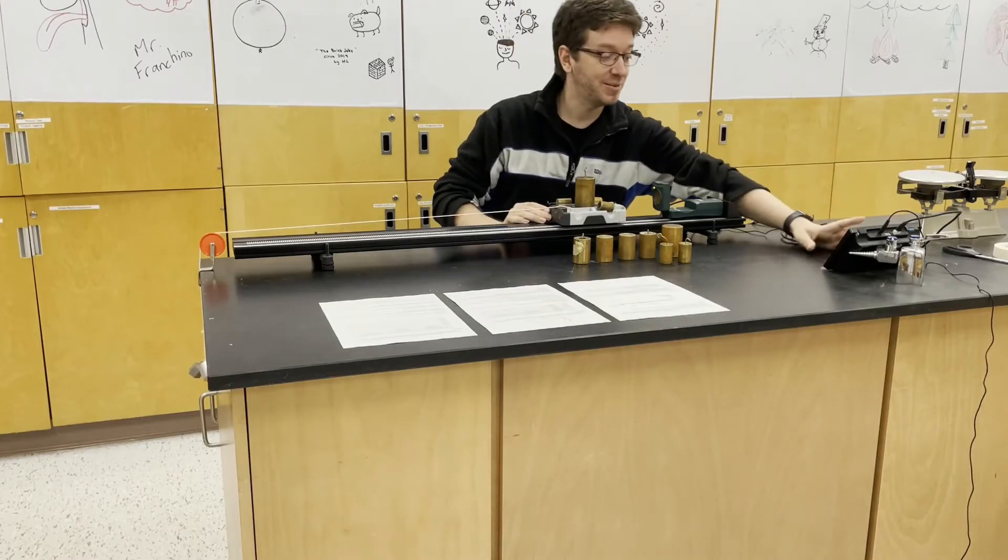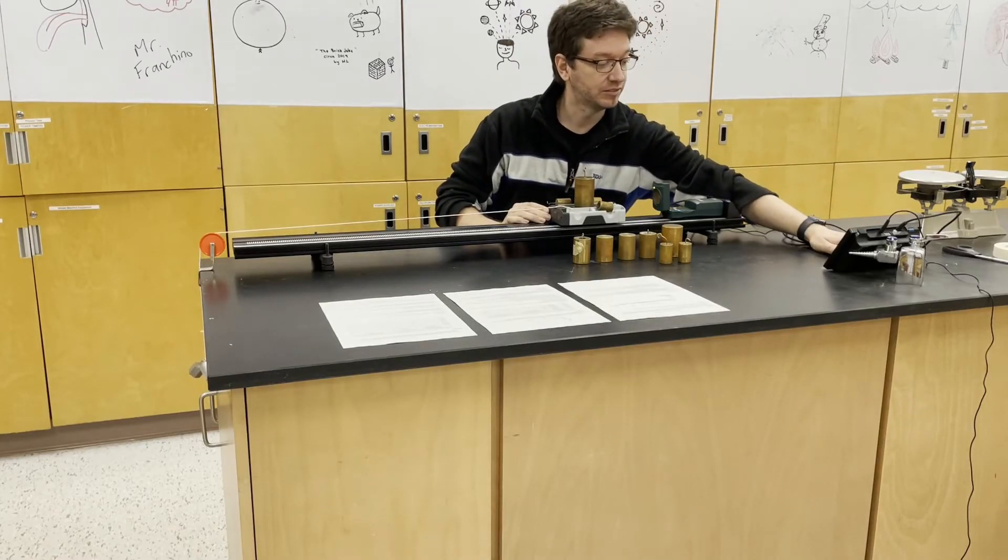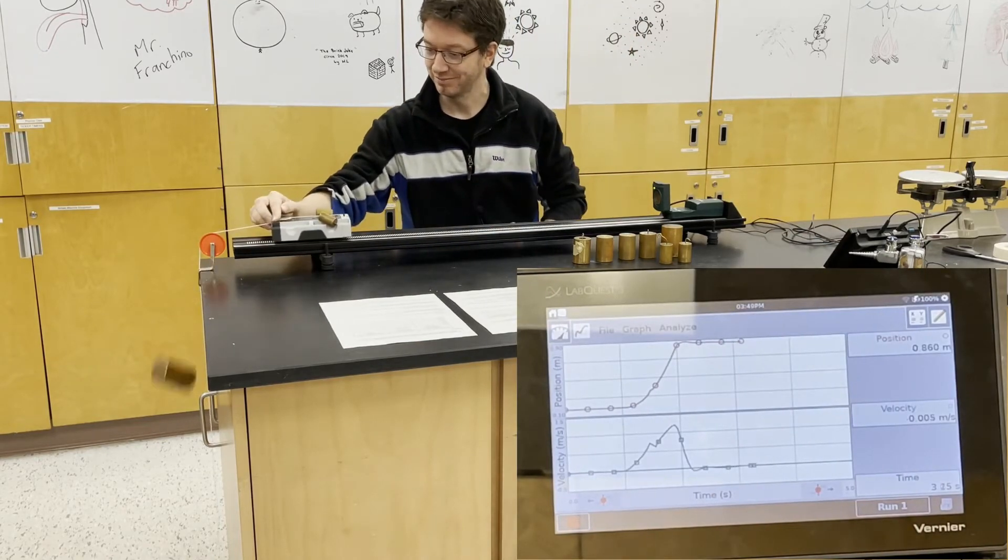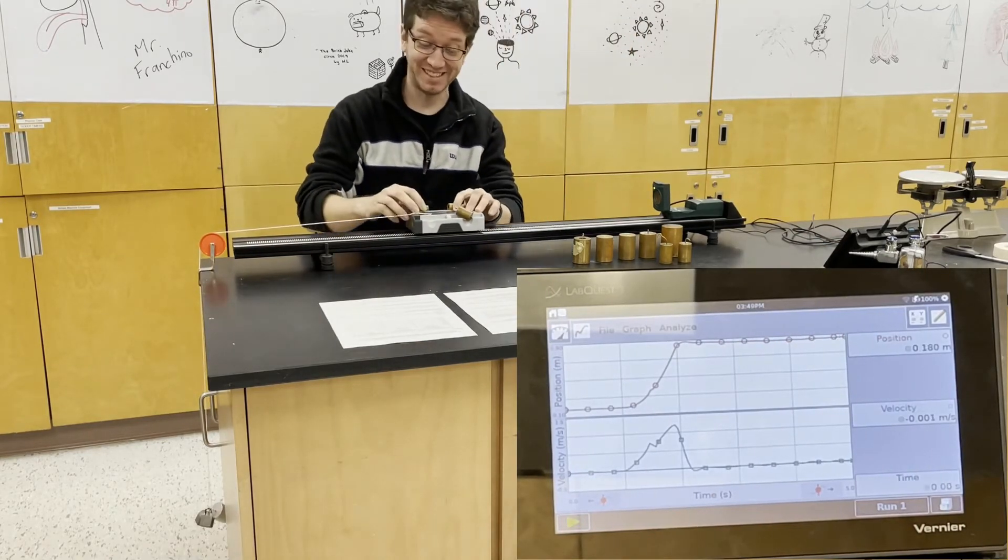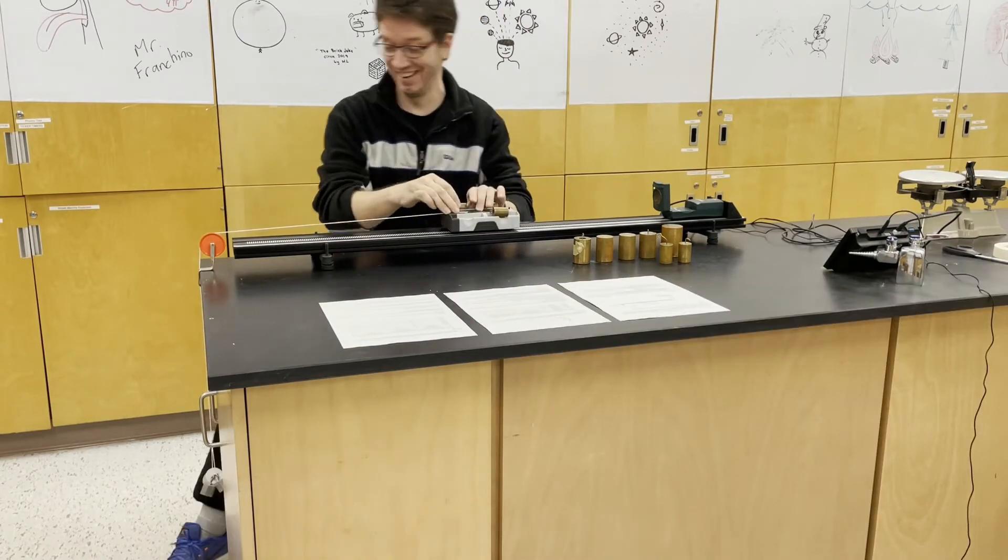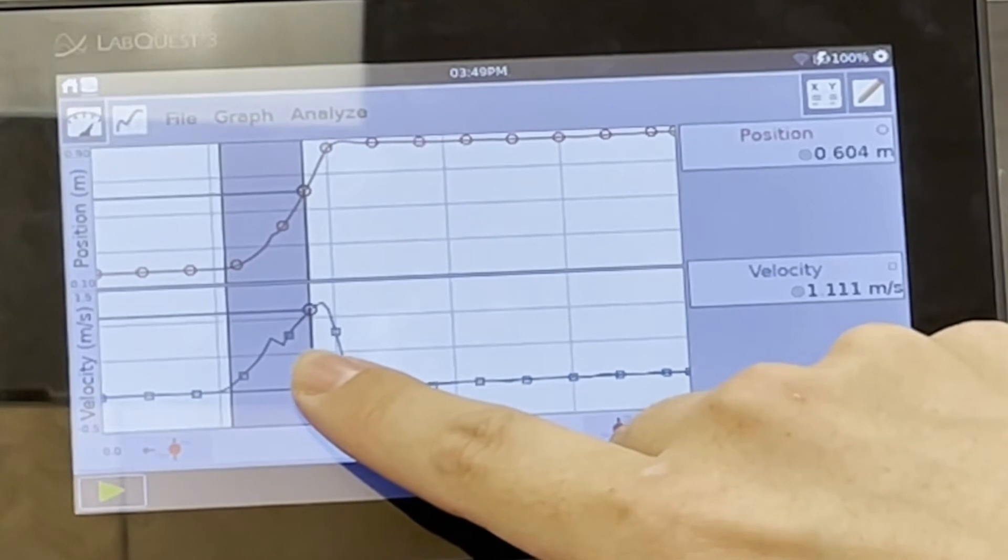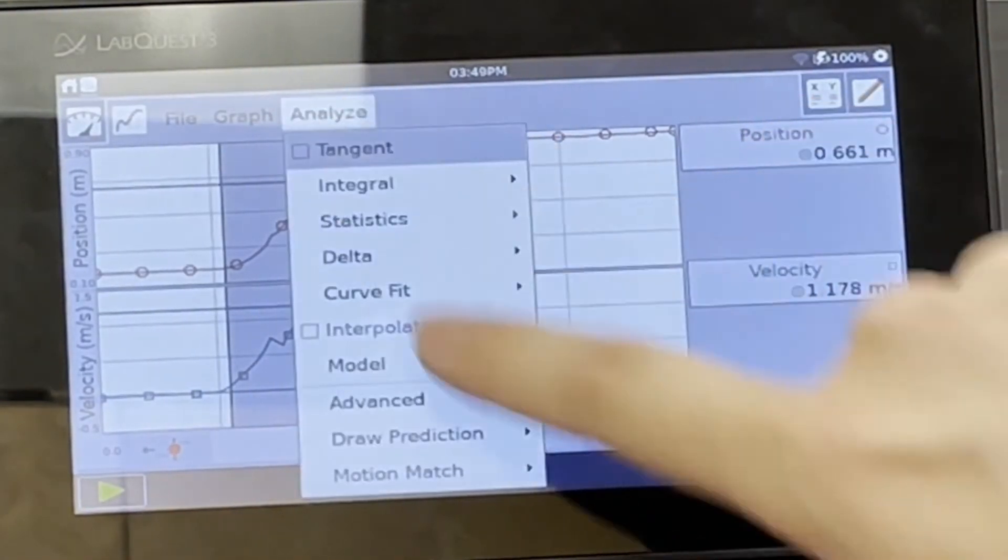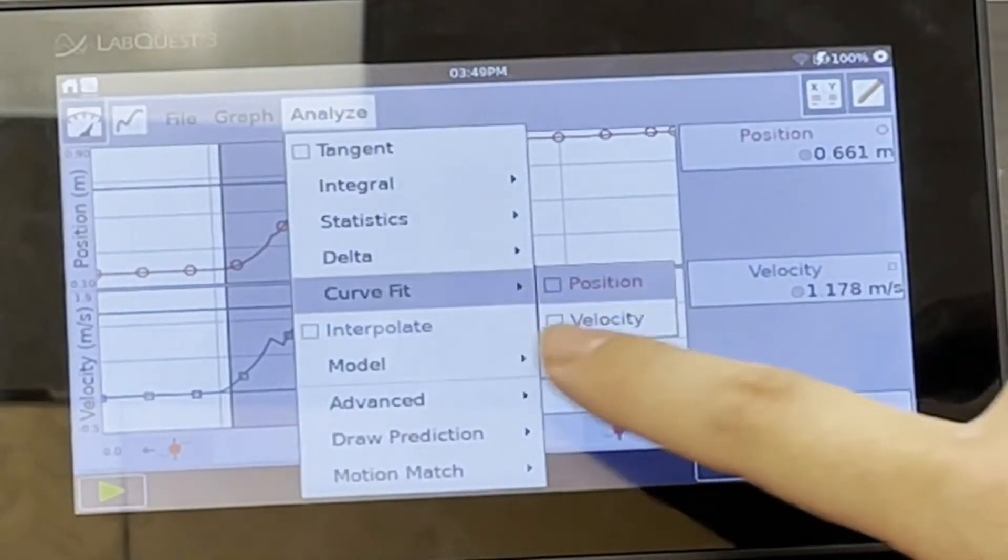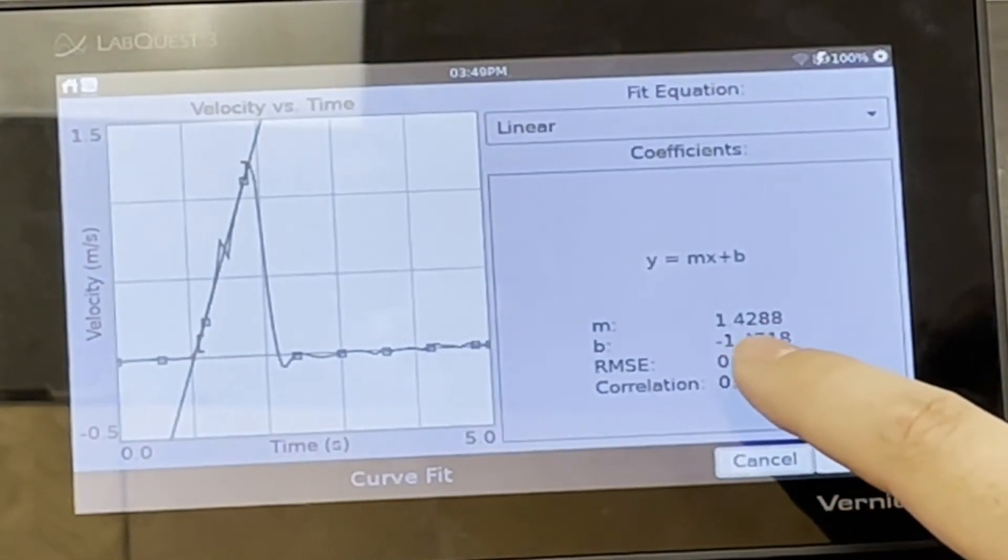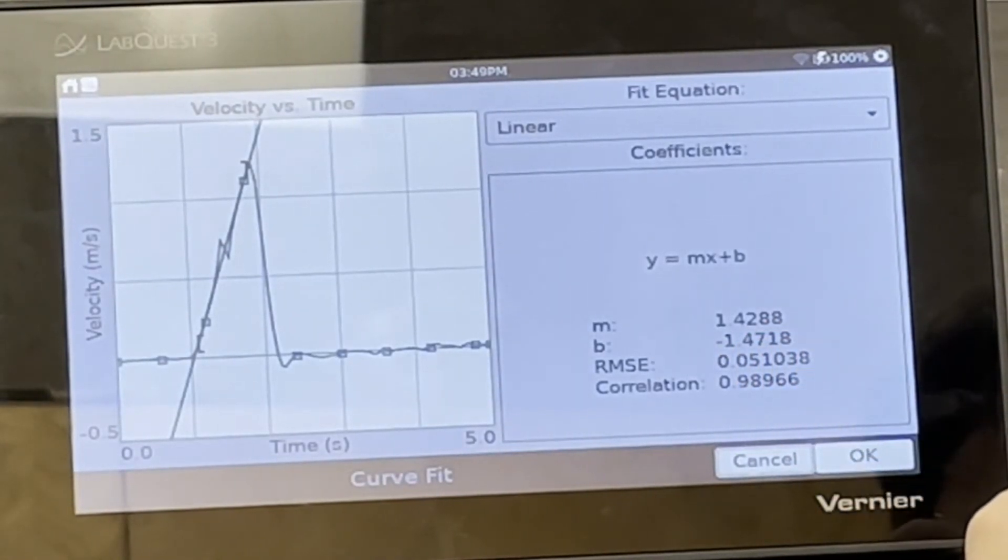Now we have 300 grams on the hanging mass. Acceleration is starting to pick up there. So here, our acceleration is 1.4288 meters per second squared.